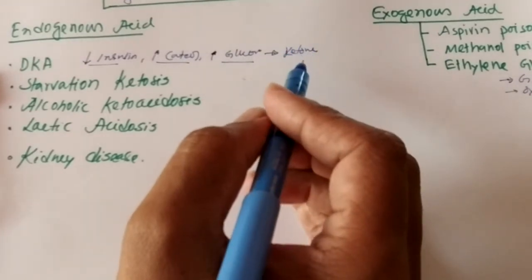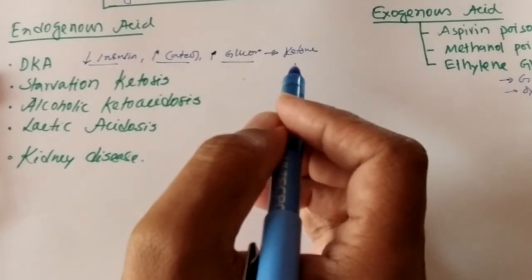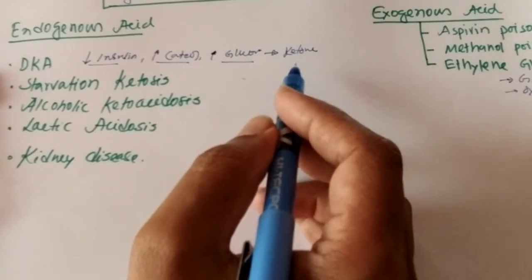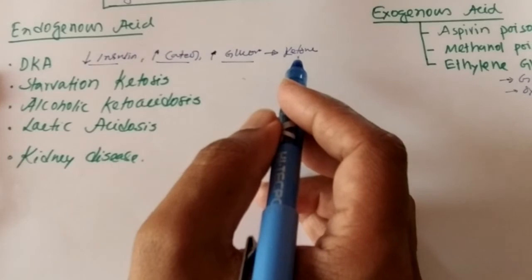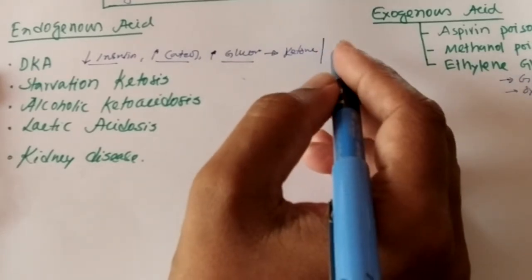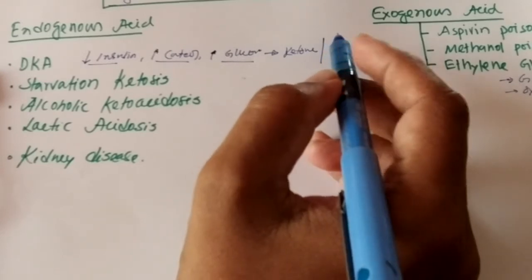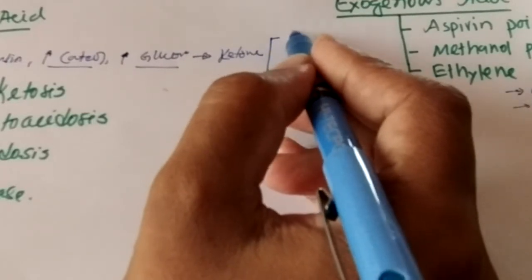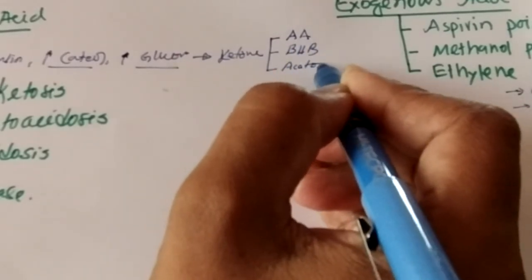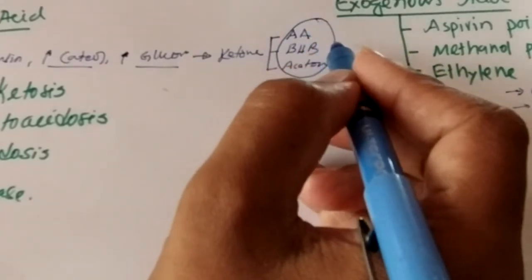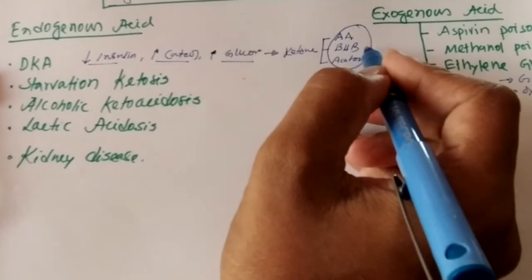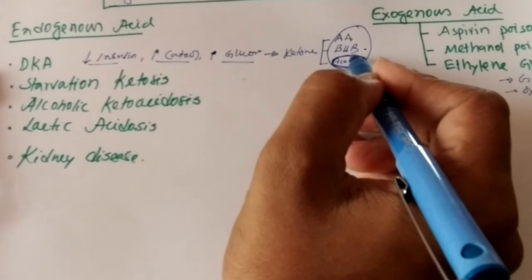Ketone bodies are normally produced in the body in small amounts and are highly energy-yielding substrates. When ketone bodies are produced in high amounts beyond the capacity of the liver, they accumulate. Since ketone bodies are acidic in nature, they produce metabolic acidosis. There are three main types of ketone bodies: acetic acid, beta-hydroxybutyrate, and acetone — all three are weak acids.